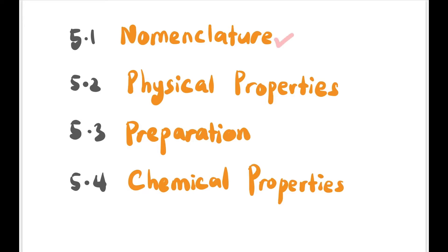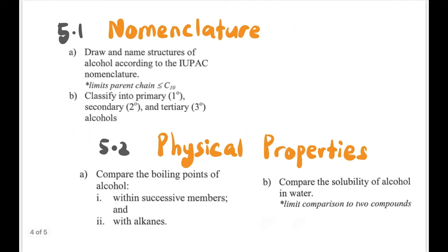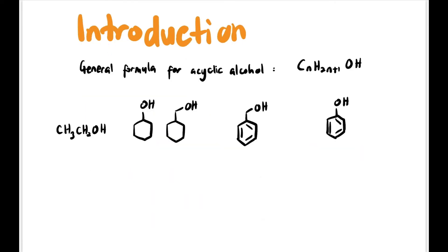At the end of this lesson you should be able to draw and name the structure of alcohol according to IUPAC nomenclature, and also classify them into primary, secondary, and tertiary alcohols. You will also learn to compare the boiling points of alcohol and the solubility of alcohols in water.